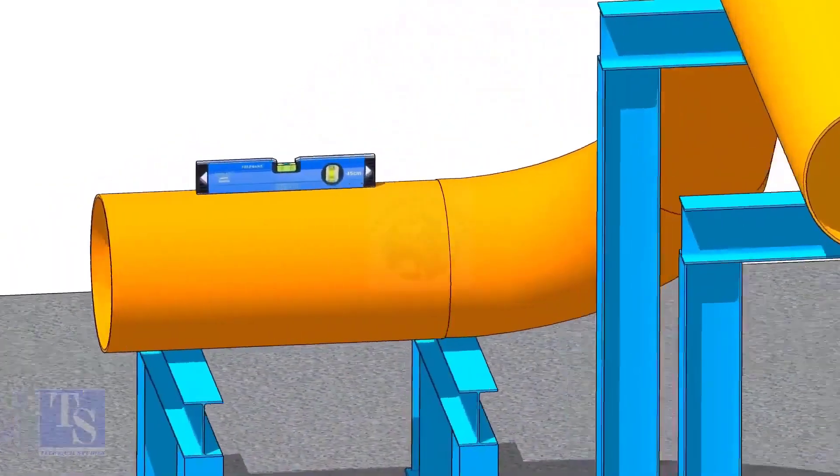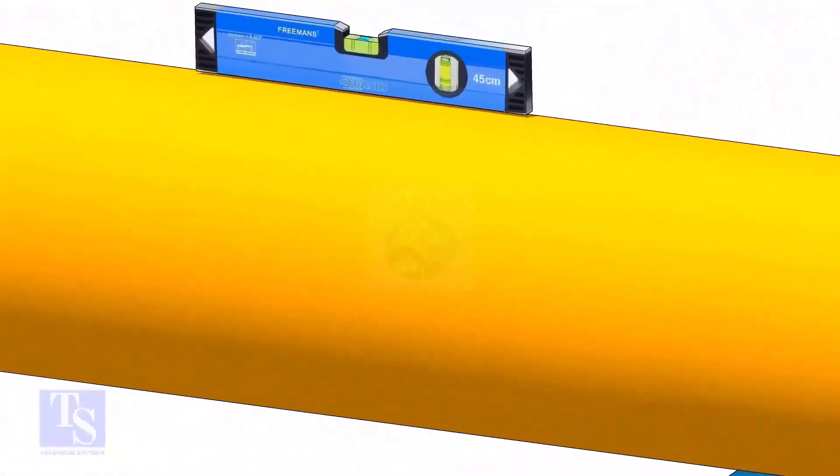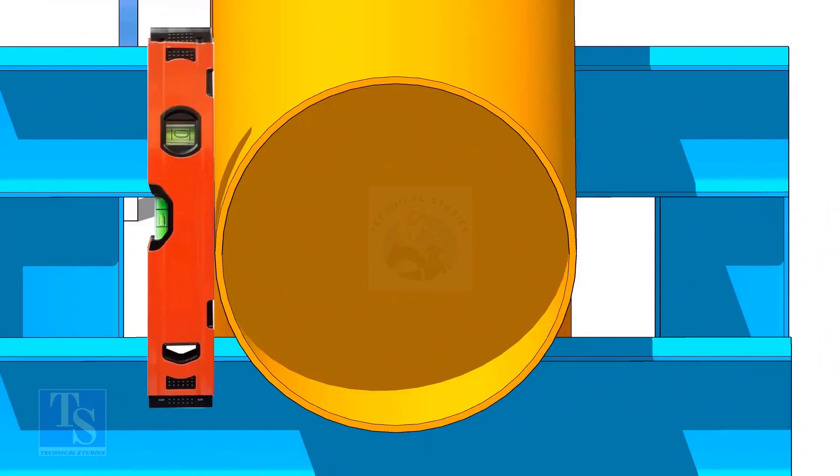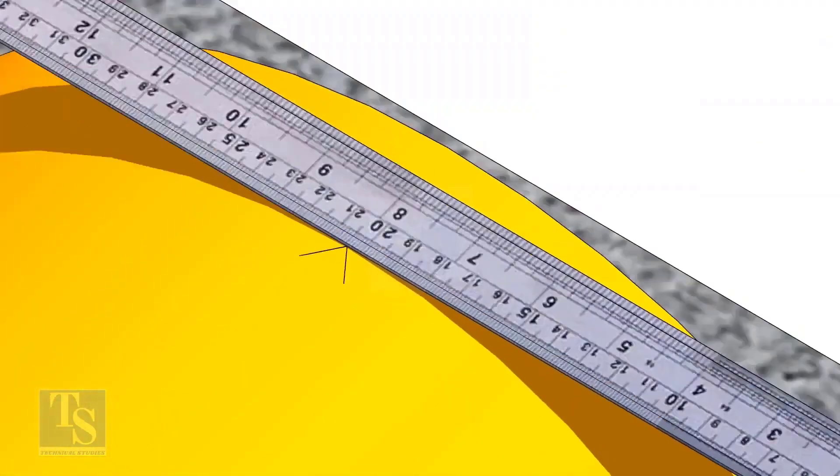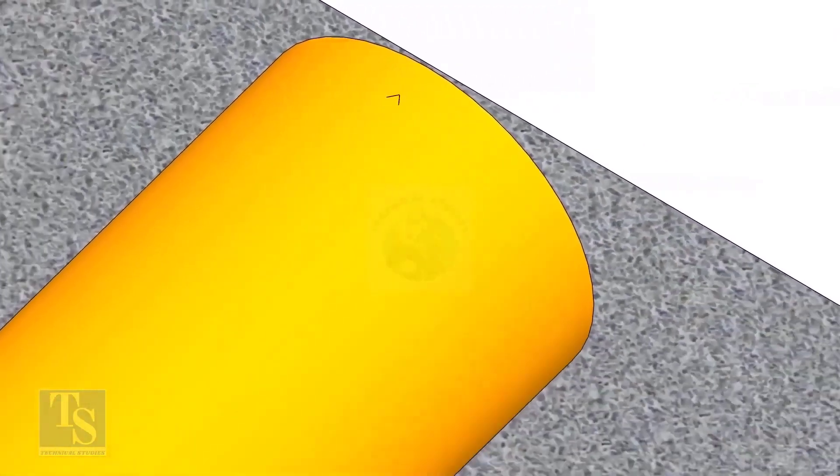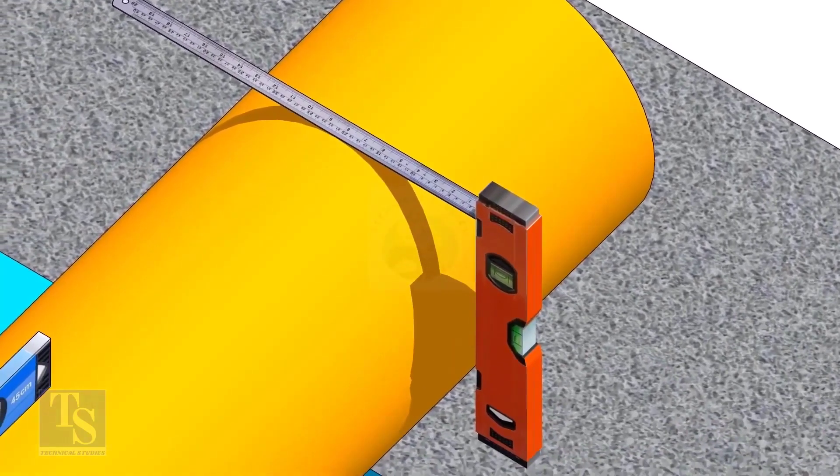After leveling the pipe, mark the center line. Don't forget to punch mark this line. Mark half OD at 300mm apart. This pipe OD is 406mm, so mark 203mm from the vertical level bottle, on the top of the pipe. And draw a line connecting these marks.